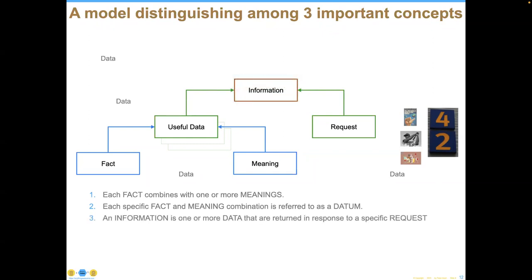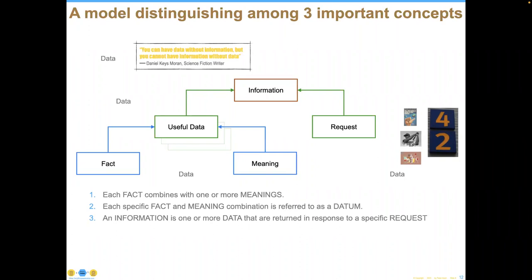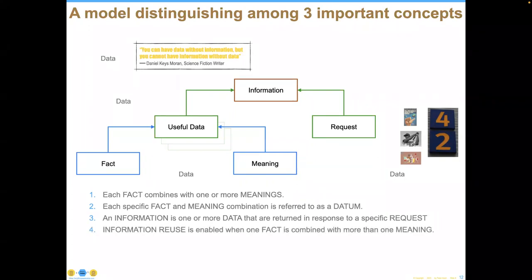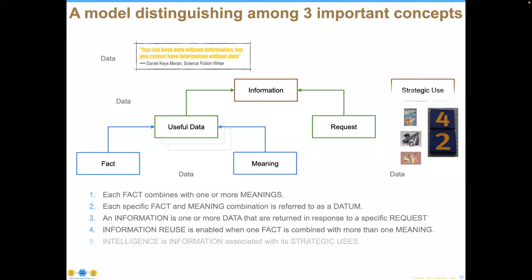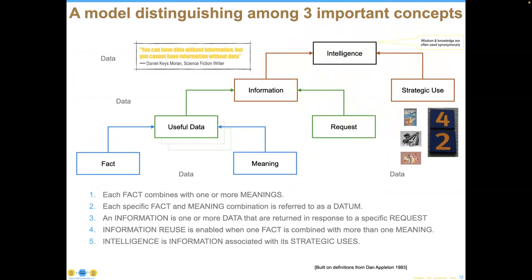We don't just want all data — we want only useful data so we can understand what we need and avoid information overload. The difference between data and information is that information exists when somebody asks for it, whether in the form of a report or other configurations. You can have data without information, but you cannot have information without data. This shuts down every instance of people saying they'd like to manage information separately from data. We want to get to the highest level of the pyramid — knowledge, wisdom, or intelligence — and strategic use is what differentiates information from intelligence.